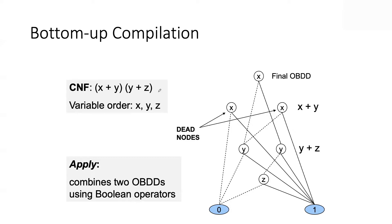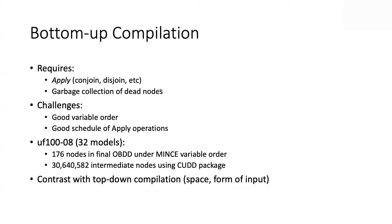Dead nodes can be a real problem if not managed because you can run out of memory because of them. If you're building a bottom-up compiler like the SDD compiler or the CUDD compiler for OBDDs, you have to do what we call garbage collection — keeping track of dead nodes and deciding what to do about them. If you're too aggressive and start garbage collecting nodes too early, they may be needed later, and you may end up deleting things from memory and then reconstructing them.